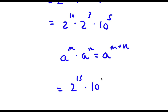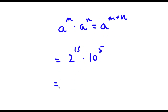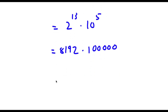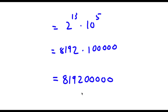So now I have 2 to the power of 13 times 10 to the power of 5. 2 to the power of 13 is equal to 8,192, and 10 to the power of 5 is 100,000. Multiplying these two together gives 819,200,000. So this is my final answer.